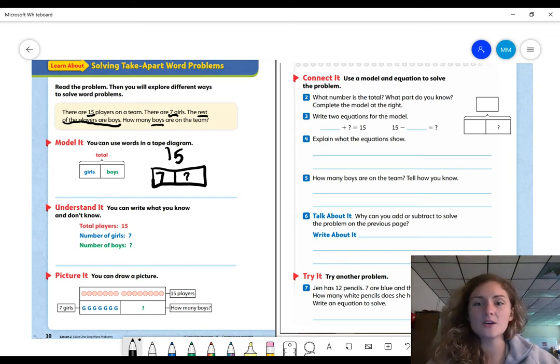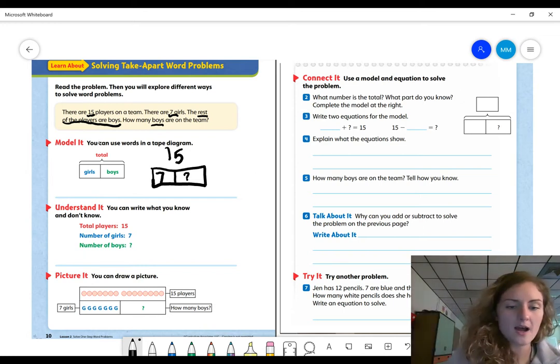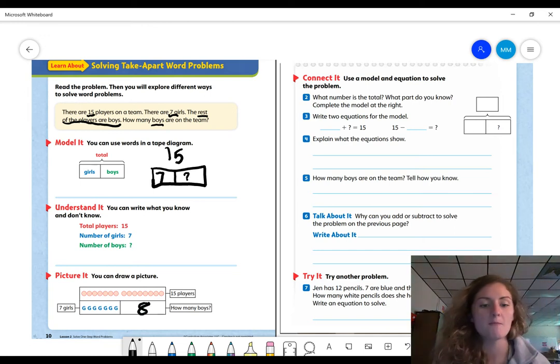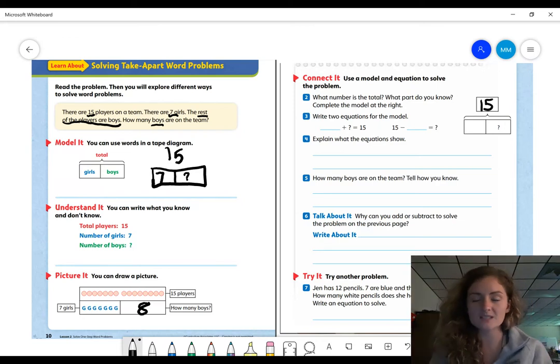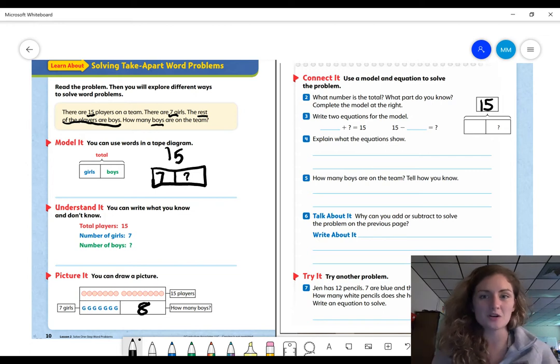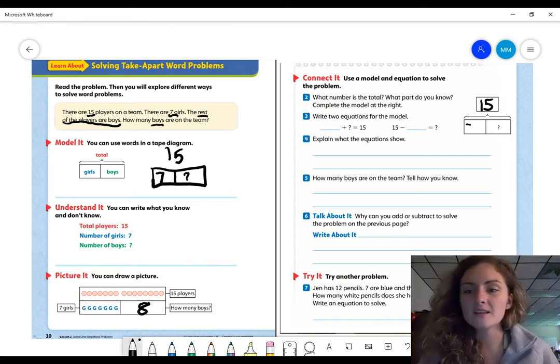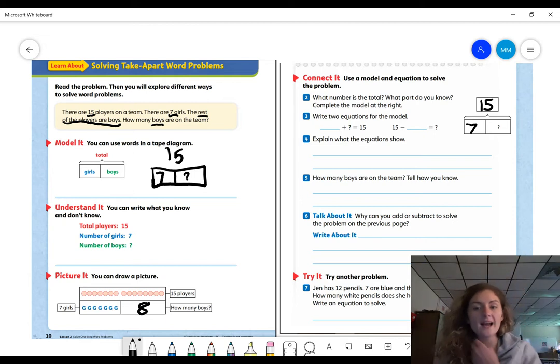It says we can use a model and equation to solve the problem. So I'm going to write down here that our boys, we had eight boys. It says what number was the total? How many players did we have? We had 15 players. So I'm going to put it in this box because this tells me my whole, because my whole is going to go on top of my model. So what part did we know? How many girls were on that team? We knew seven before we had to find how many boys.